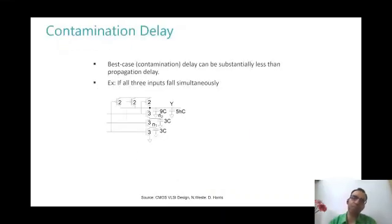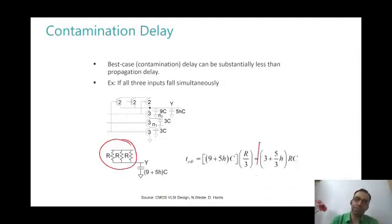And what about the contamination delay? For the PMOS side it is very simple. All the 3 PMOS's have to turn on simultaneously. So the effective resistance would be R by 3. And this would be the fastest that my output would bubble. Are you able to see this? So what about the falling contamination delay? What happens there?